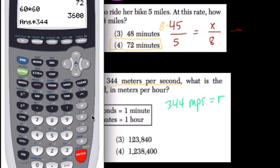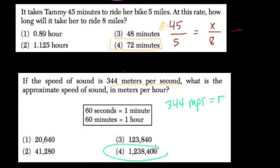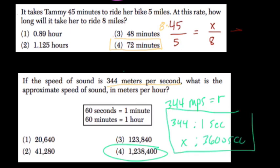Right, and that's 1,238,400, and you can think of it as a ratio. If it's 344 meters for one second, how many meters X would it be for 3600 seconds? That's kind of the ratio we were solving here.